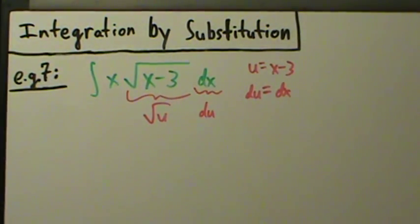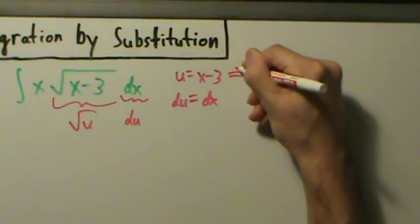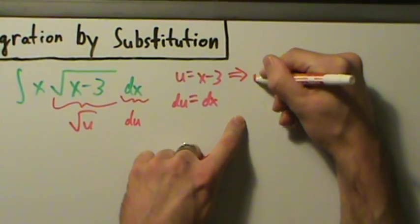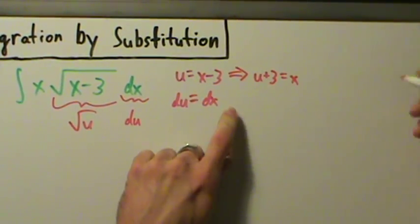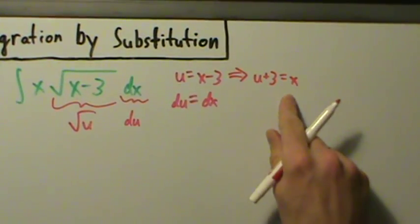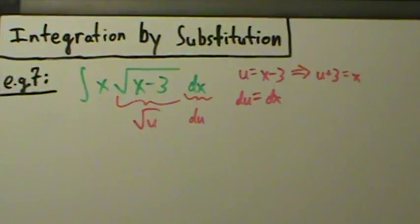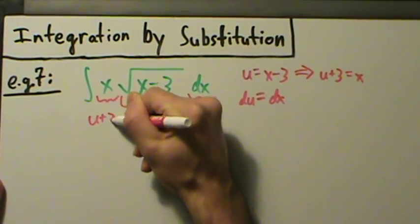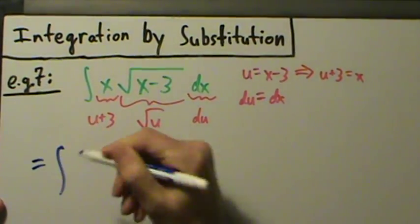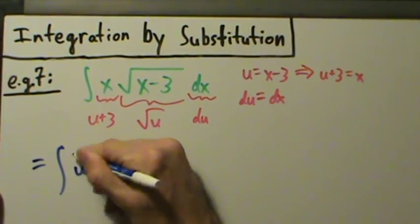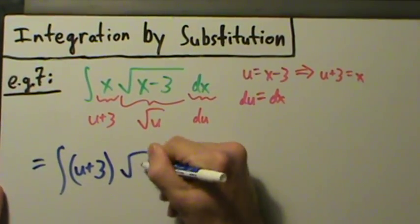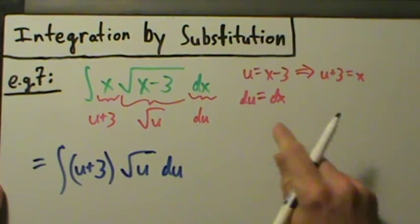So what are we going to do with that extra x? Well, if u is x minus 3, then that implies that if we add 3 to both sides, u plus 3 equals x. So if u is x minus 3, just add 3 to both sides of that equation, and then u plus 3 equals x. Now we can make this substitution and rewrite x as u plus 3. So the integral becomes x replaced by u plus 3, square root of x minus 3 becomes square root of u, and dx is just du.